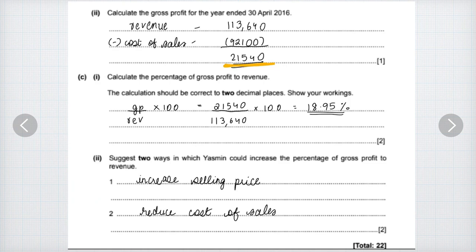Then we have to calculate the percentage of gross profit to revenue — that is the gross profit margin. We do gross profit divided by revenue, multiplied by 100. Gross profit is $21,540 divided by revenue of $113,640, multiplied by 100. Rounding to two decimal places, it comes to 18.95%.